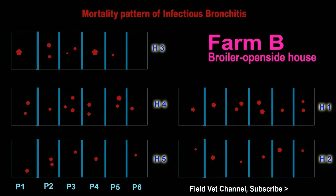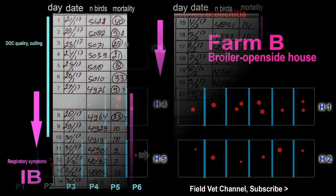On Farm B, chicken mortality rate increased, with dead chickens found dispersed in every pen and in every chicken house. If there is a secondary bacterial infection, the mortality will be higher. In both farms, the mortality rate began to rise a week after infection occurred in all the chicken houses and all the pens. The mortality rate is not as high as in cases of Newcastle disease or avian influenza.